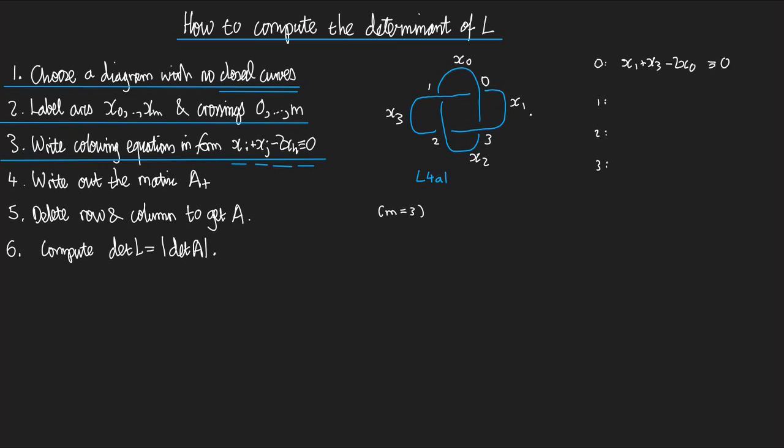At 1, it's X0 plus X2 minus 2X3 congruent to 0. At 2, it's X1 plus X3 minus 2X2 congruent to 0.